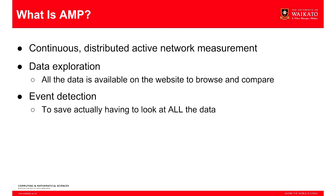So that's what active measurement is — measuring networks by putting packets on there and seeing what happens. AMP is a system to do active measurement in a continuous and distributed fashion. Continuous means it's always running, performing measurements 24/7, not just in response to us realizing the network's down. It's scheduled so tests run at an interval that's useful without overloading the network.